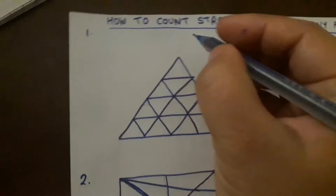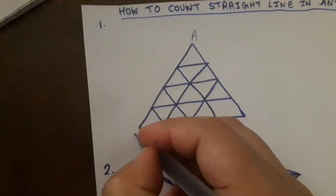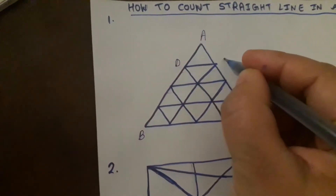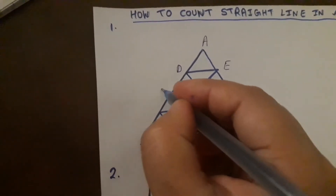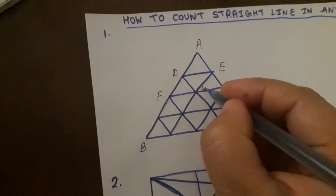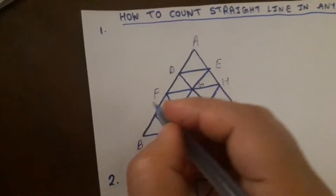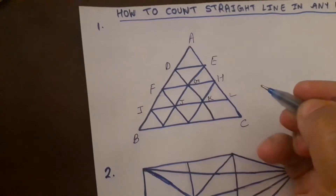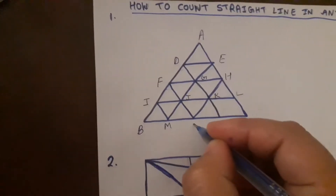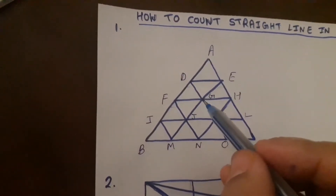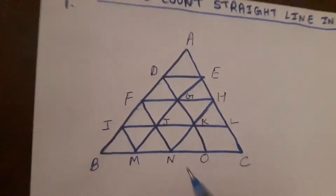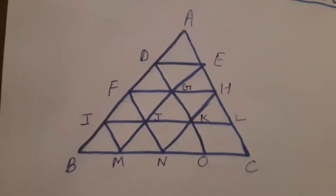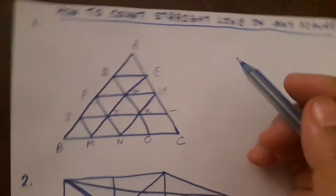Let's start labeling. A, B, C — always label the diagram first, then it will be very easy to count how many straight lines are there. D, E, F, G, H, I, J, K, L, M, N, O. Wherever there are intersecting points, we have to label them. First we have to label the figure. Now we start the counting.